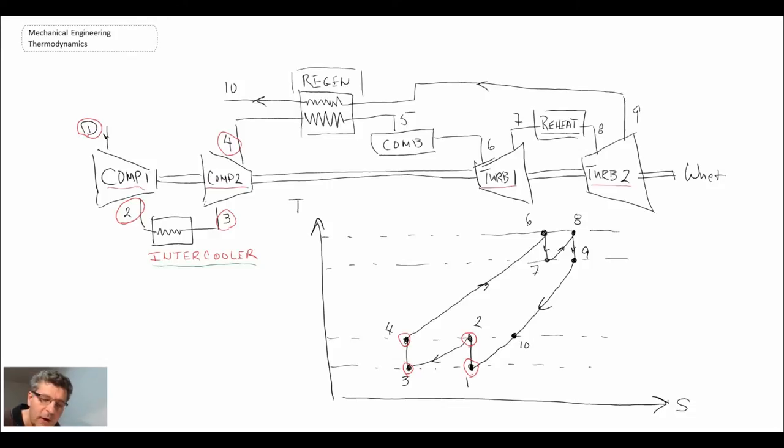We then go into combustion. We do have reheat as well. If we're in an ideal world, it would take us up there, but in reality we won't go that high because our regenerator would have some certain effectiveness. But we will go into a combustion process, taking us up to state six after combustion.